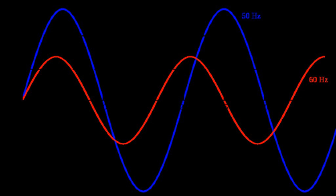The utility frequency or mains frequency is the nominal frequency of the oscillations of alternating current in an electric power grid transmitted from a power station to the end-user. In large parts of the world this is 50 Hz, although in the Americas and parts of Asia it is typically 60 Hz. Current usage by country or region is given in the list of mains power around the world.